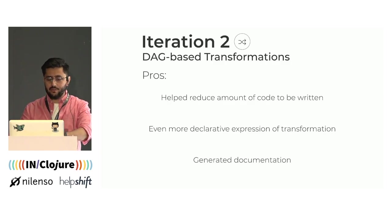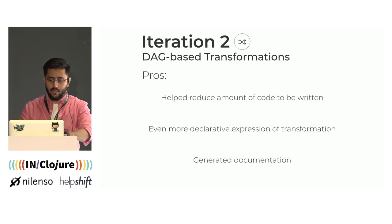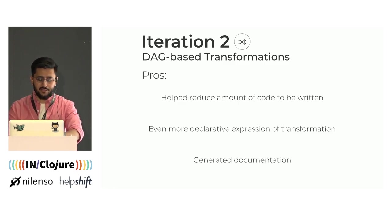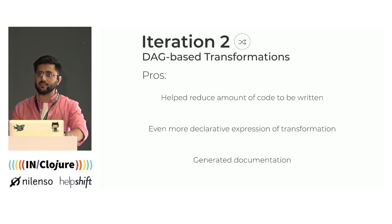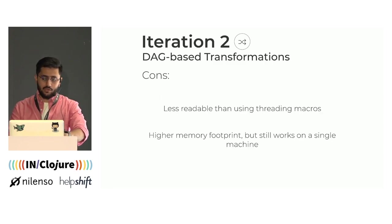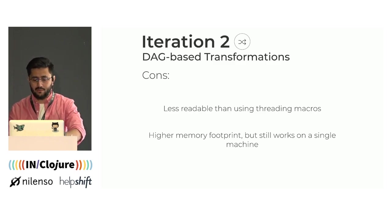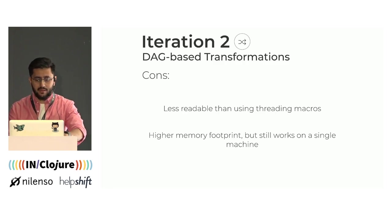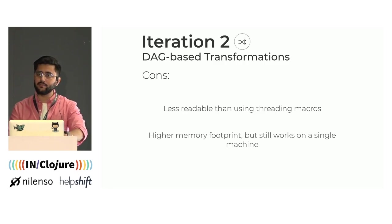This was helpful because it reduced the amount of code we needed to write and moved us in a more declarative direction. One of the benefits of being more declarative was that we were able to generate diagrams, and it also moved us toward potentially expressing these transformations with a UI that business users could eventually use. On the flip side, this wasn't as readable as what we got with the threading macros, but that was an acceptable compromise. It also had a higher memory footprint than the custom scripts, but it still worked on a single machine with our datasets, and that was good enough for us.